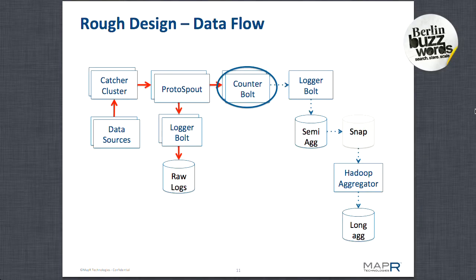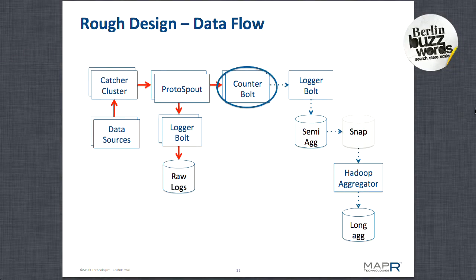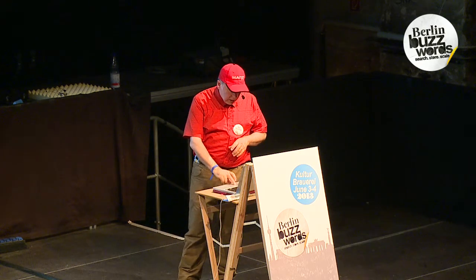Here's the rough idea. We're going to start on the left where the data sources are. We're going to throw them into a queuing layer, which merely provides a little bit of elasticity so that we can be doing maintenance downstream without losing data upstream. Then we'll put it into a protospout — a protobuffer spout, a Storm construct, a thing that reads data. We're going to log it because we always log raw logs in the big data world. We're also going to pass it now to the counterbolt. The counterbolt is the beginning of the boundaries between real and long time.